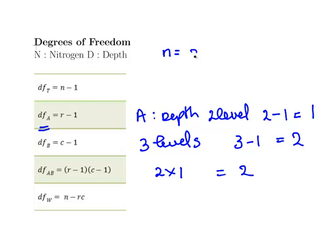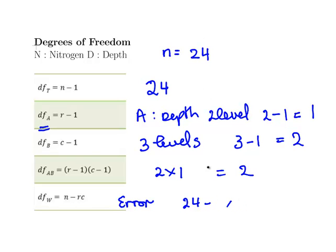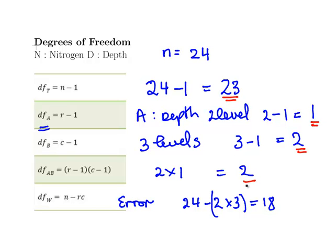The overall N is 24 — there are 24 observations — so the total degrees of freedom is 24 minus one equals 23. The error degrees of freedom is N minus R times C, that is 24 minus two times three, which is six, equal to 18. So the important degrees of freedom are: total 23, depth 1, nitrogen 2, interaction 2, and error 18.